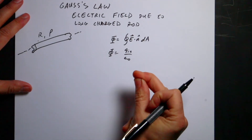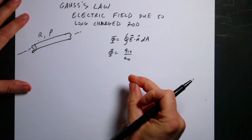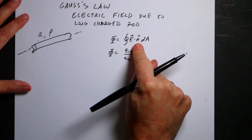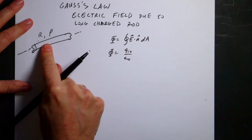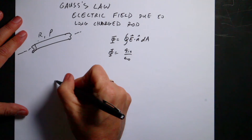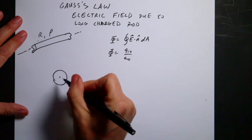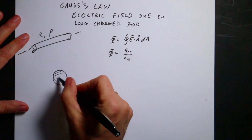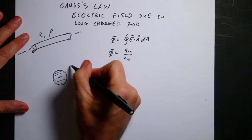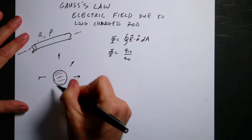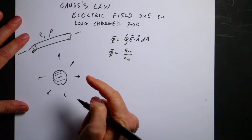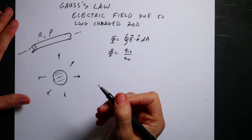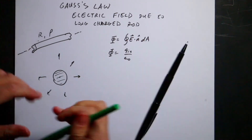In order to use this to find the electric field, you have to already know something about the electric field — you're cheating already. You have to pick a shape such that the integral becomes trivial. Looking at this charged rod head-on, I'll assume the electric field points radially away and that its magnitude is constant at the same distance.